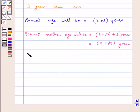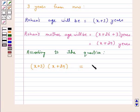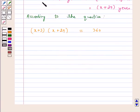According to the question, the product of their ages 3 years from now will be 360. That is, X plus 3 times X plus 29 equals 360. On solving this, we get X squared plus 29X plus 3X plus 87 equals 360.